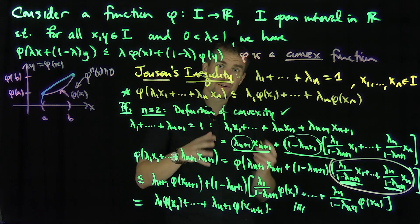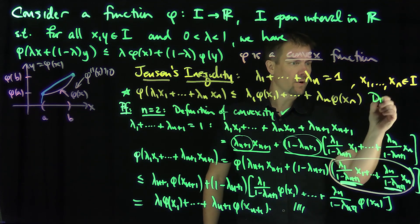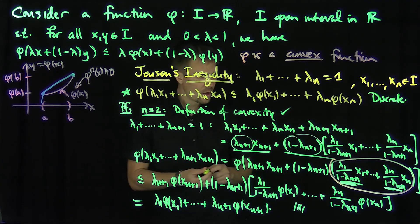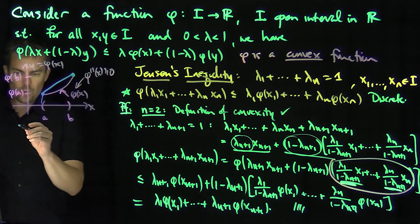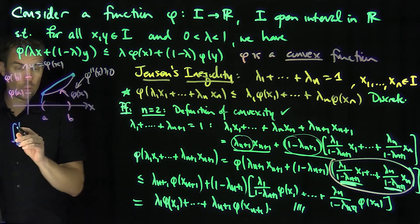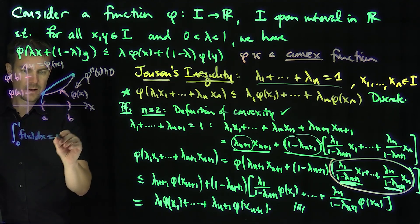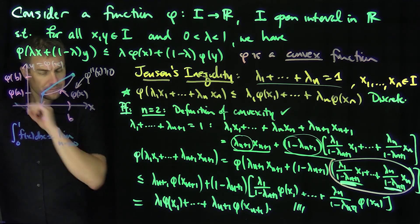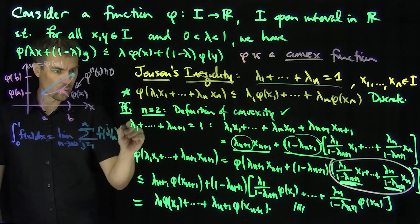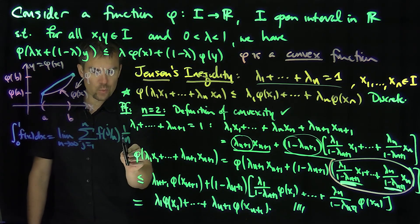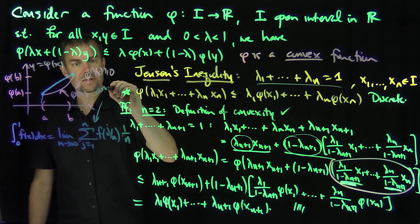The discrete Jensen's inequality gives a hint of Jensen's inequality in the continuous case. This is the discrete version because it's for a finite number of points. In the continuous case, recall that if I integrate f of x over 0 to 1, that's a space whose weights add up to 1. The integral is just the limit as n goes to infinity of the sum J from 1 to n of f of J over n times 1 over n — and those 1 over n's add up to 1, so this is a convex combination.